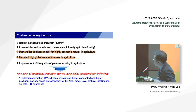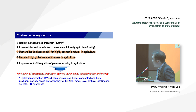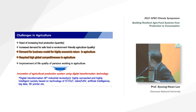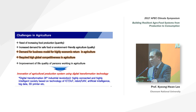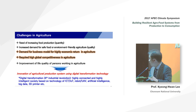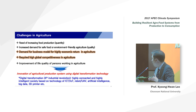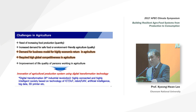My answer is that we can contribute to solving these issues using innovation of agriculture production systems with data transformation technologies. In some countries this is called 4th industrial revolution technology — where society is highly connected and highly intelligent, based on IoT, robots, UAV, artificial intelligence, big data, and 3D printers. I want to apply these technologies to agriculture.